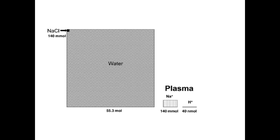A similar diagram illustrates that water is the main component of this theory, followed by sodium and chloride. The hydrogen ion concentration is very minimal compared to these two important structures.